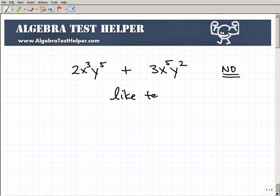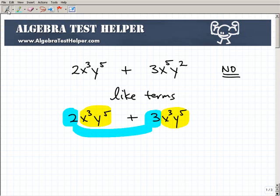For example, what if I had 2x cubed y to the fifth and I had 3x cubed y to the fifth? Remember, you have to key in on the variable and power part—they have to be exactly the same. If they are exactly the same, then I can actually combine them like like terms. So in this case it would be 5x cubed y to the fifth.